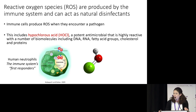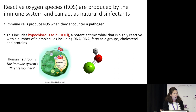So how does your body deal with any infectious agents? We have multiple layers of defense, including your immune system. Your immune system is very quickly activated when it senses an infectious agent like a bacteria or a virus. And when these immune cells see this infectious agent, they produce compounds known as reactive oxygen species, or ROS.